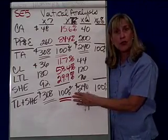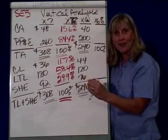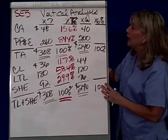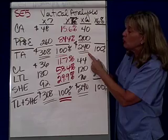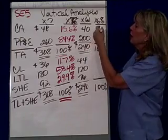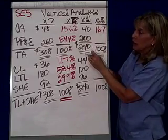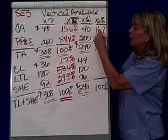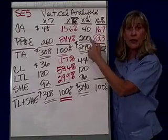We can compare it to either the industry standards, what we had forecasted, or the previous year. So let's look at X6 as well. In X6, total assets came to 240,000. Thus 40,000 as a proportion is 16.7%. Property, plant, and equipment — 200,000 divided by 240,000 — is 83.3%.